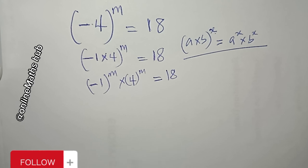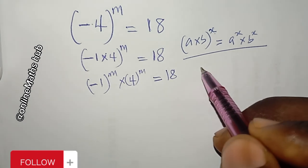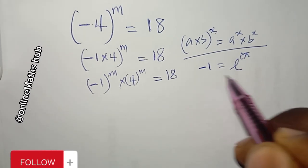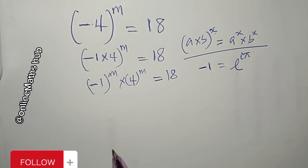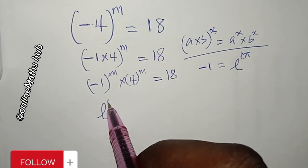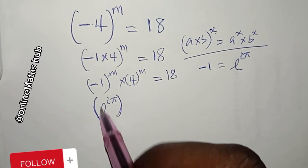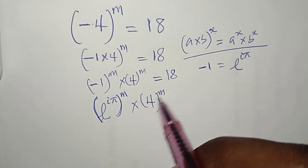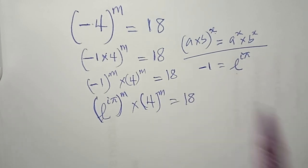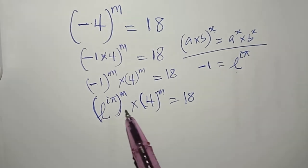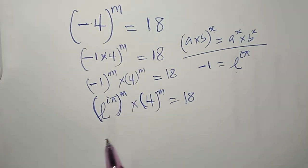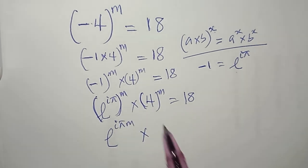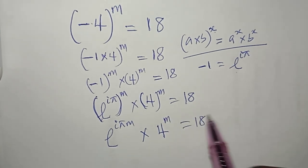Next I make a substitution: minus 1 is equal to e^(iπ), so I replace minus 1 with e^(iπ). That gives me e^(iπ) to the power m, multiplied by 4 to the power m, equal to 18. Multiplying through, this becomes e^(iπm) times 4^m equals 18.